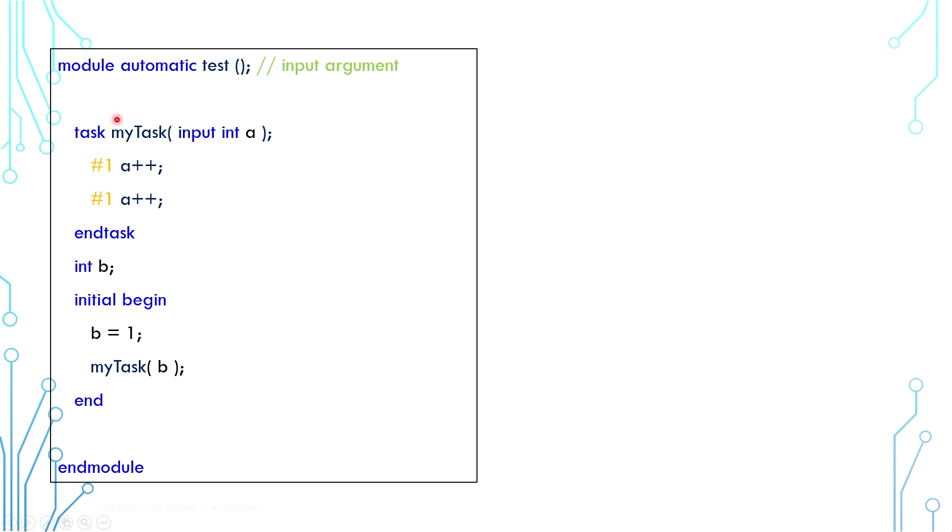Now let's take a look at the behavior of an input argument. This is a simple task with an input argument A. The task increments the value of A at a separate timing. Outside the task, there is a variable B. And now let's walk through this step by step.